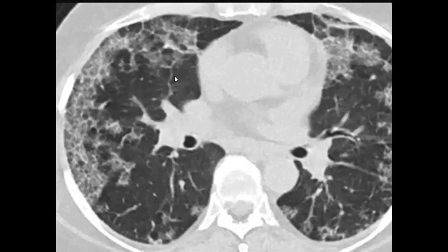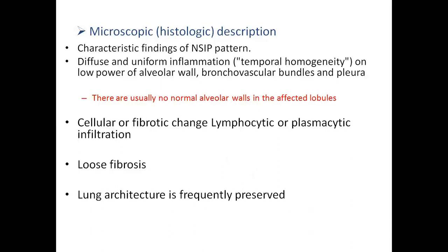This HRCT of an NSIP patient clearly shows reticular opacities present in a diffuse manner and diffuse ground glass opacities throughout both lungs. Regarding microscopic features, as mentioned, NSIP shows diffuse and uniform inflammation with homogeneity. Depending on whether there is a high amount of cellular infiltrate or predominant fibrosis, it will be typed accordingly as cellular or fibrotic NSIP.